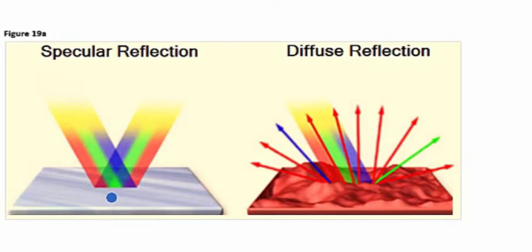It occurs with mirrors and other shiny surfaces because surface imperfections are smaller than the wavelength of the incident light. Therefore, virtually all of the light is reflected equally.